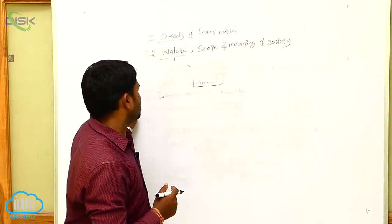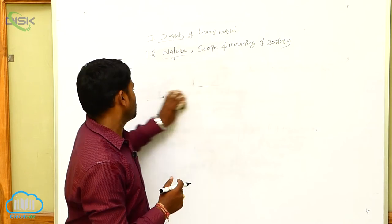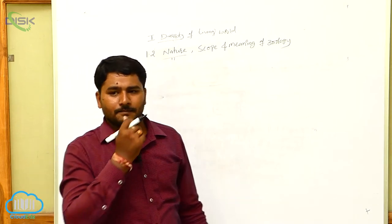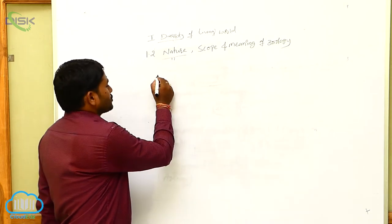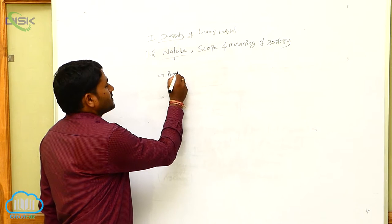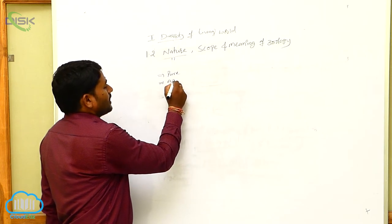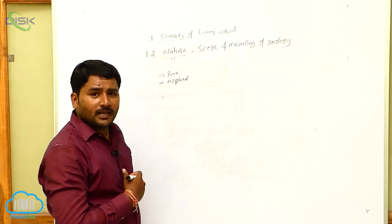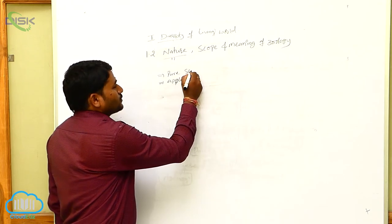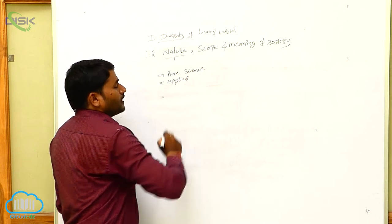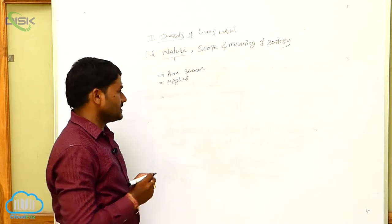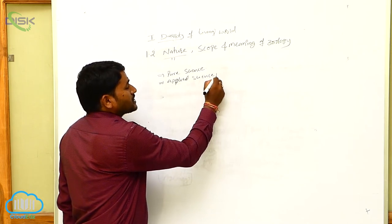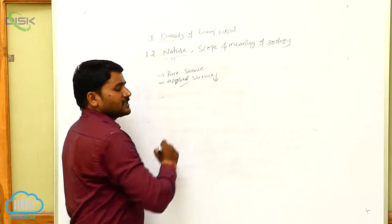Now let us see the scope. Generally, science is of two types: one is pure science and the second one is applied science. Obtaining of knowledge is known as pure science, and application of pure science is called applied science.